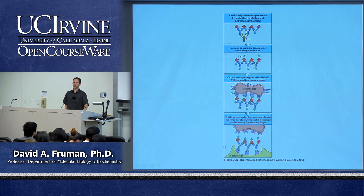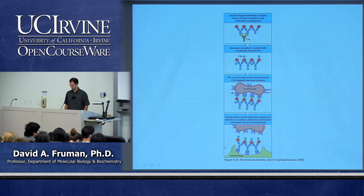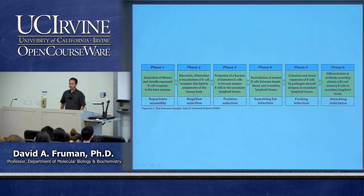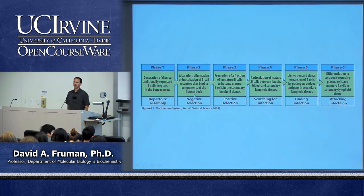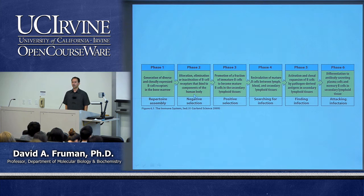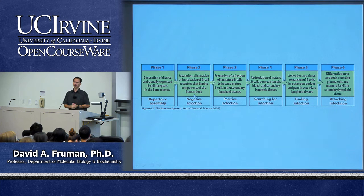Question: do immature B cells that attack the human body ever not get destroyed? Yes, that could be the source of self-reactive B cells that lead to autoimmune disease. We'll deal with that in the next lecture — failures of deleting or inactivating self-reactive B cells. The general idea is central tolerance versus peripheral tolerance. Central tolerance occurs in bone marrow where developing B cells are deleted if self-reactive; thymocytes are deleted in the thymus. But it's not 100% effective, so peripheral lymphoid organs have other mechanisms to prevent auto-reactive cells from getting activated.